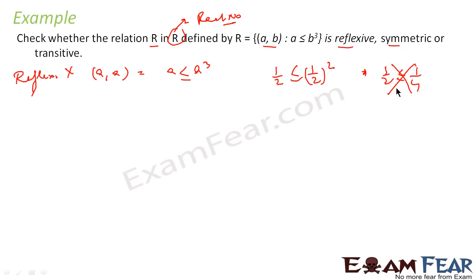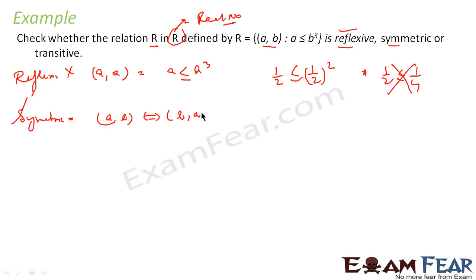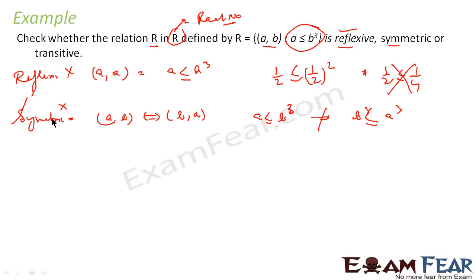Had this been natural numbers, it would be reflexive. For symmetric, if (a, b) is a member then a ≤ b³, but this does not imply b ≤ a³ — both are two different statements. This may not be true, so it is not symmetric either.